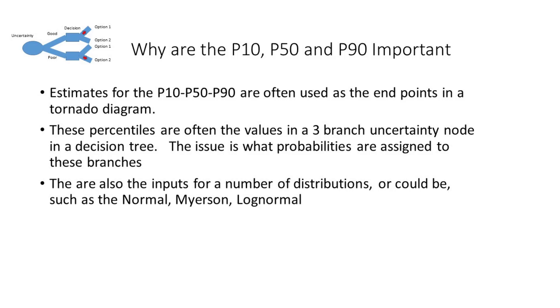So why are these percentiles, P10, P50, and P90, important? Well, they're often used as the endpoints in a tornado diagram. The tornado diagram has to reflect the uncertainty of each of the uncertainties, and so oftentimes it's the P10 and P90. It could be the P5 and P95, but you want to use percentiles rather than some multiplication.